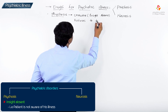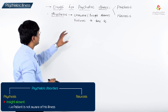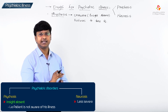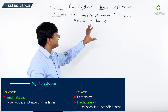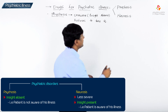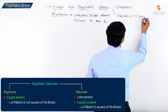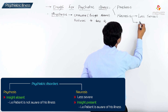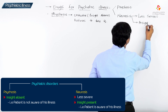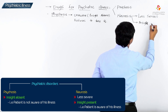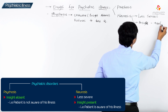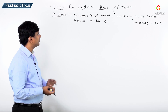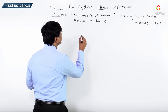Whereas in neurosis, neurosis is a little less serious and the patient knows that he is having some illness — that is, the insight is present. In neurosis, the patient is aware of the illness; the insight is present.